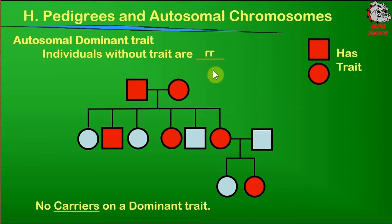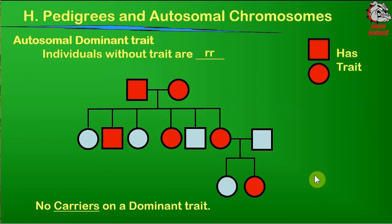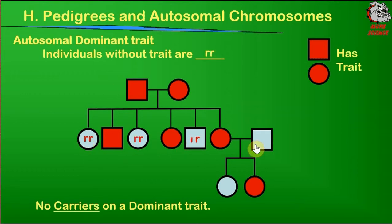I'm going to label them with R's because capital R and lowercase r look very different. So the first thing you can do is go through your pedigree — you've got your top generation, your middle generation, and your third generation. We can look at all of the individuals that are not colored red, these blue-colored individuals, and we know their genotypes have to be lowercase r, lowercase r for every single one of them. So we can mark those right off the bat.